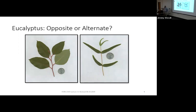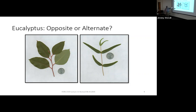Eucalyptus can be challenging to identify. Normally leaves are brought in for demonstration, but eucalyptus does not like cold and they're pretty brown and dead right now. The leaf arrangement challenge is that eucalyptus will often be opposite as juveniles and then become alternate as mature trees, so one species can actually be both.